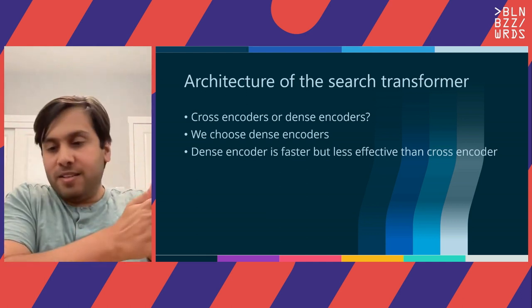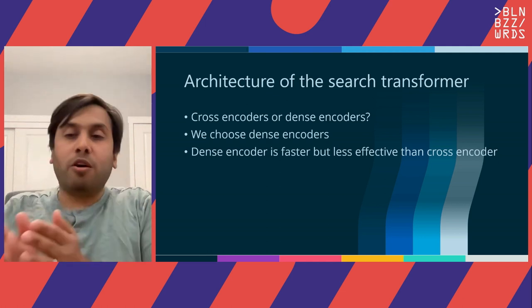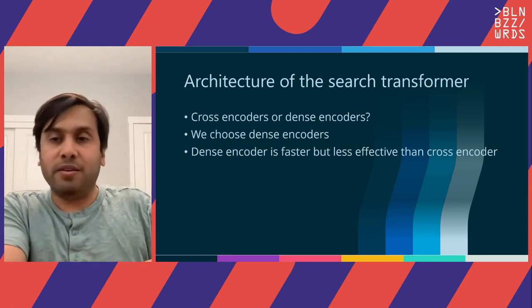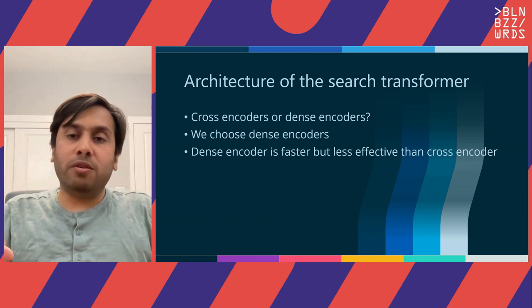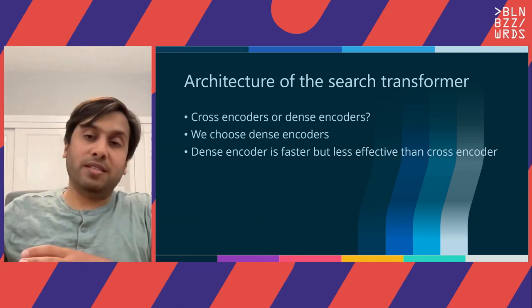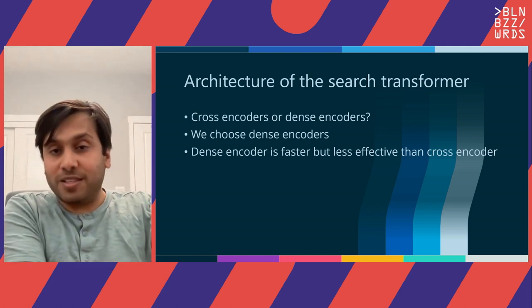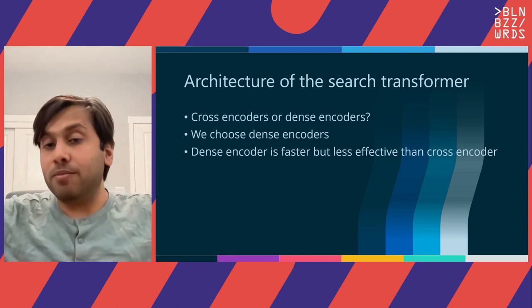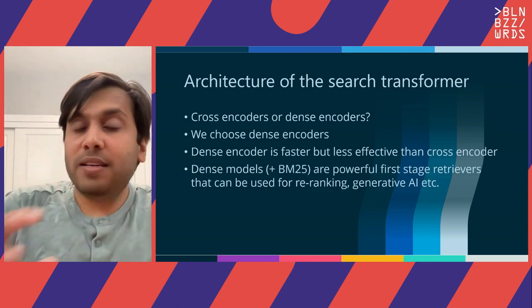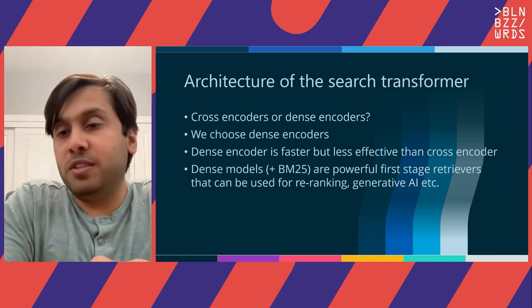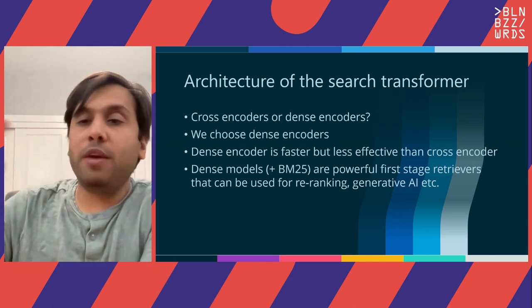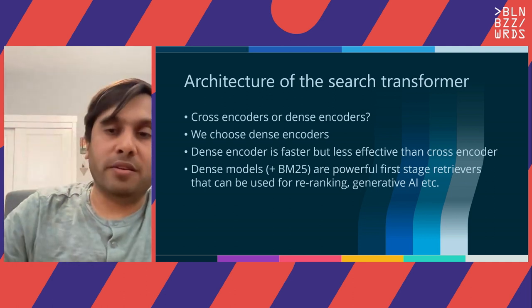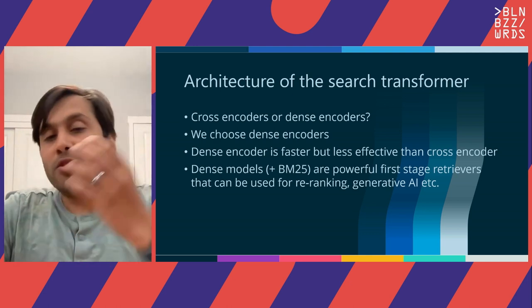Cross encoders work in a re-ranker paradigm: for a given query, the cross encoder first asks BM25 or a fast retrieval system to get the top 100 results, and then re-ranks those 100. For a dense encoder, you give it a query and it gets the top results directly without requiring BM25. I prefer to think of dense encoders and BM25 as a very powerful first-stage retrieval system that can then be used for whatever downstream purpose you're interested in — re-ranking by a cross encoder, retrieval-augmented generation for generative AI models, and so on. That's why we choose dense encoders.